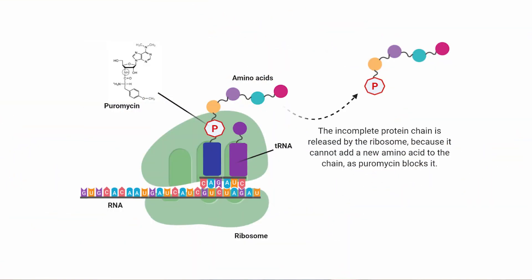Once puromycin is placed by the ribosome and its accompanying tRNA, it gets stuck — meaning translation, or protein synthesis, is terminated, leaving the puromycin stuck to an incomplete protein chain. So while the proteins are being synthesized, they are created with a puromycin tag we can now track.